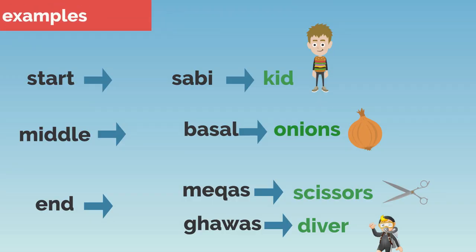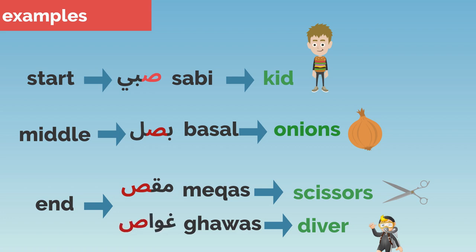Let's see some examples. When the word starts with Harfu al-Saad, like 'sabi.' When Harfu al-Saad comes in the middle of the word, like 'basal.' When Harfu al-Saad comes at the end of the word connected, like 'miqas,' and isolated, like 'gawas.'